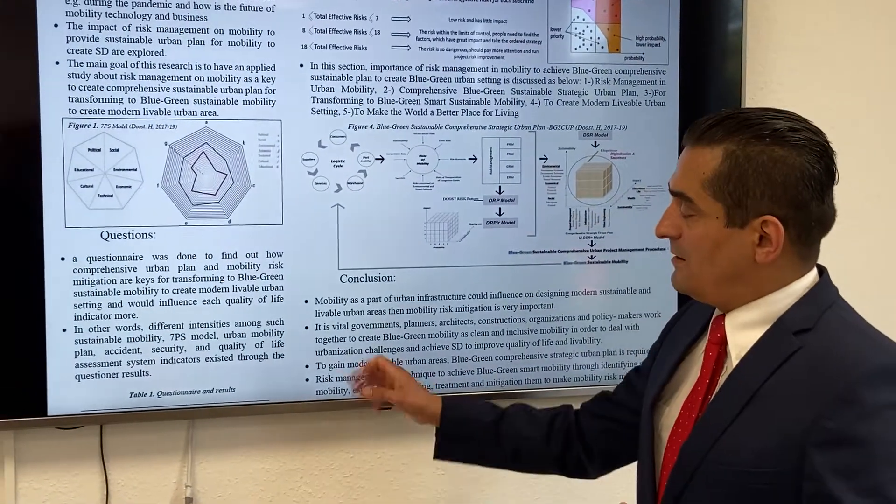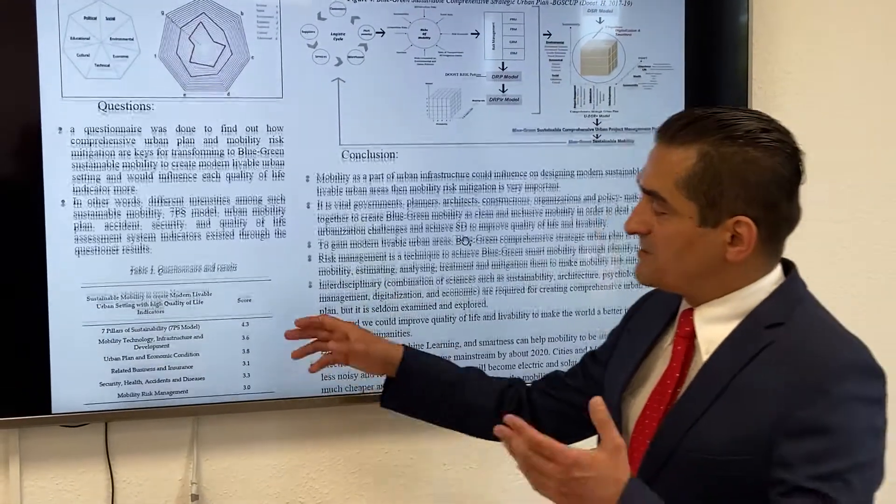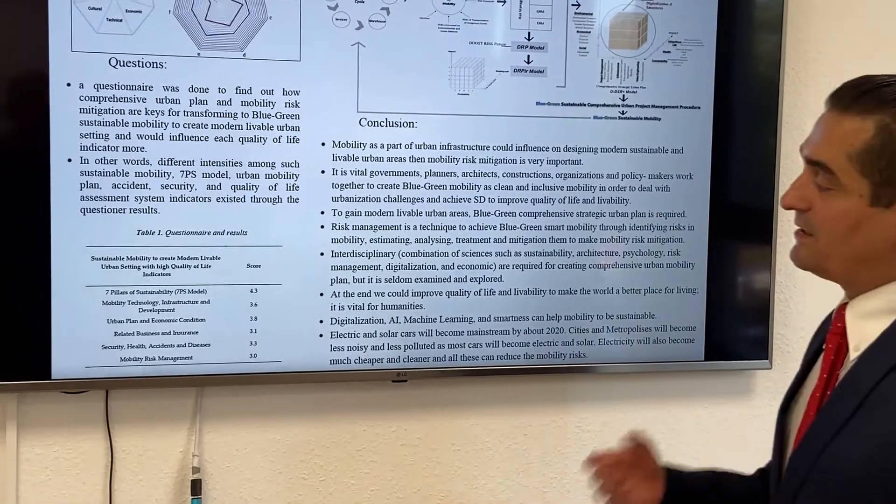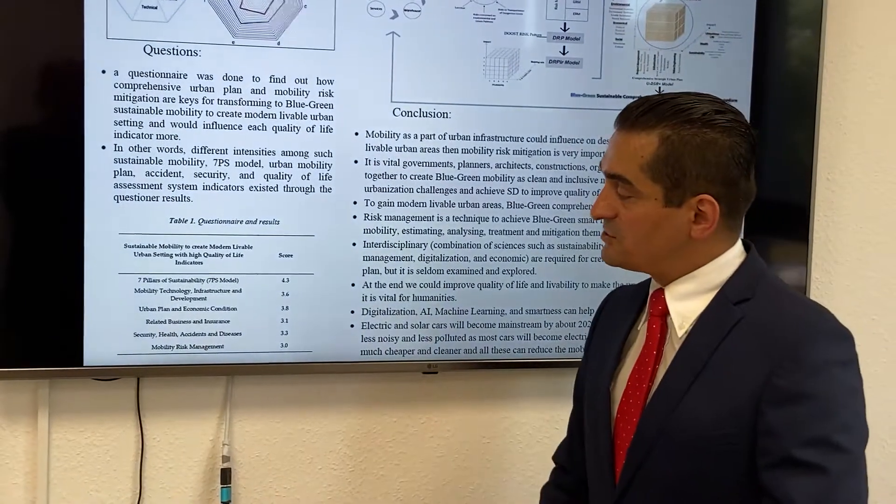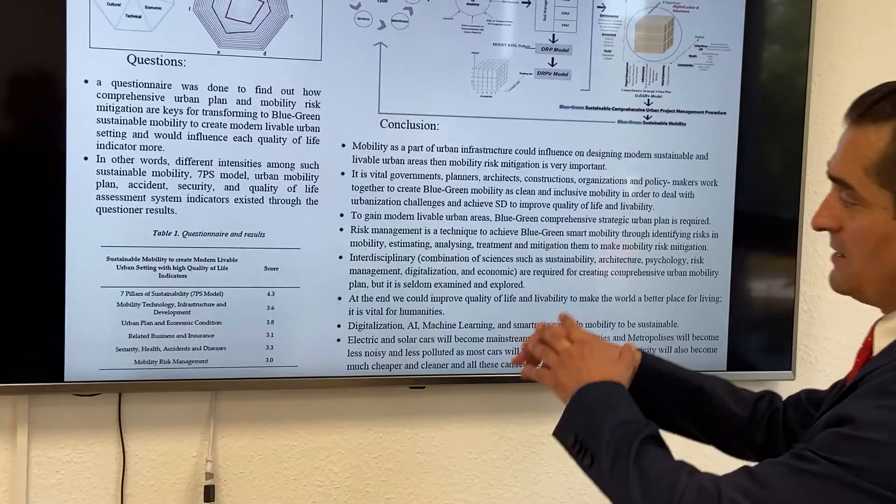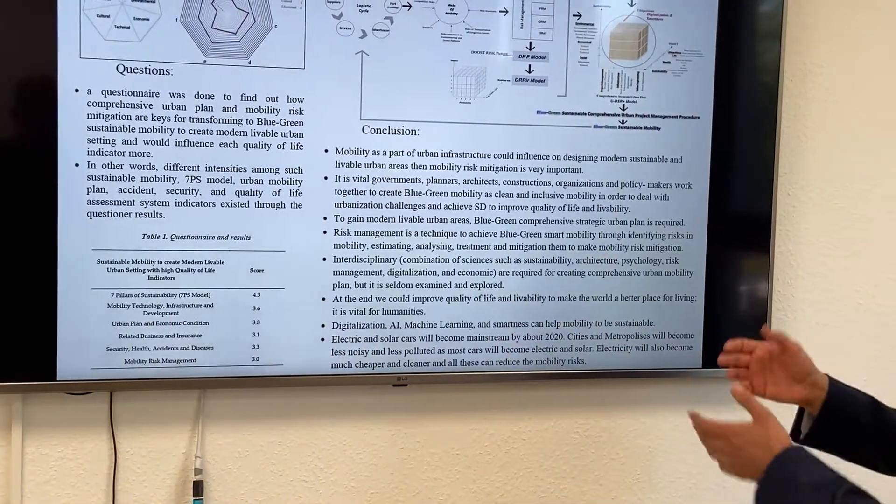Some of the questions were about the seven pillars of sustainability impact on mobility, technology, infrastructure and development, urban planning, economic conditions, related business and insurance, security, health, accidents, and mobility risk mitigation. That was scored from 1 to 5, and then I'm going to talk about the methodology, results, and discussion.